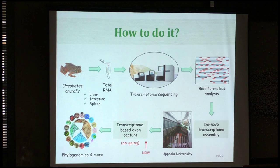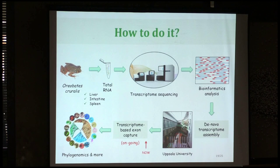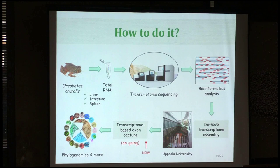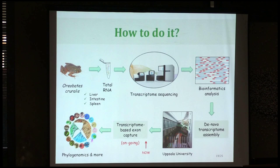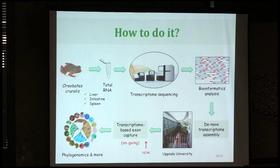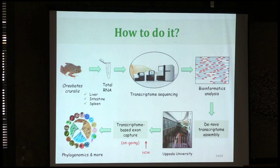The problem with transcriptome sequencing is that you need tissues stored in RNA later or a similar buffer to preserve them as they were when collected. This is not always possible to do in the field. The problem was that we only had very few samples stored in RNA later, so we could only do the experiments with one sample from one species. That's quite a limitation.